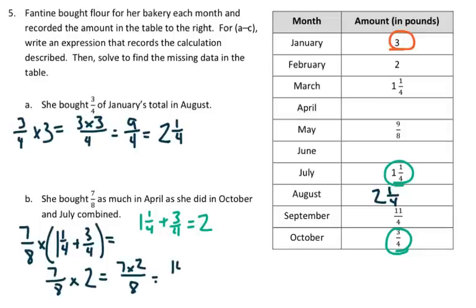So I have 14 over 8, which is 1 and 6/8, which is also equal to 1 and 3/4, and that is for April, so I'll write it right in there.